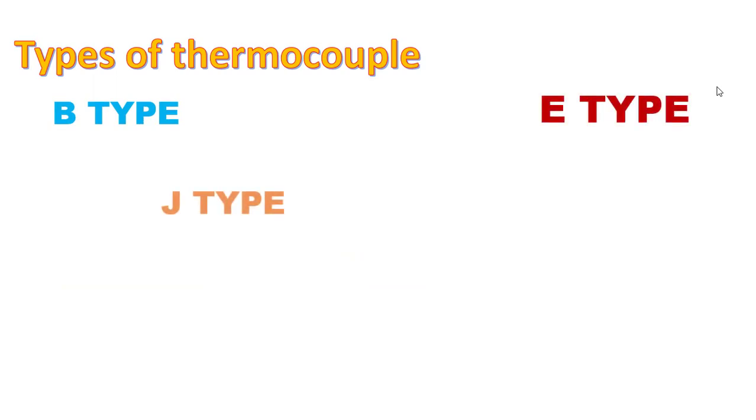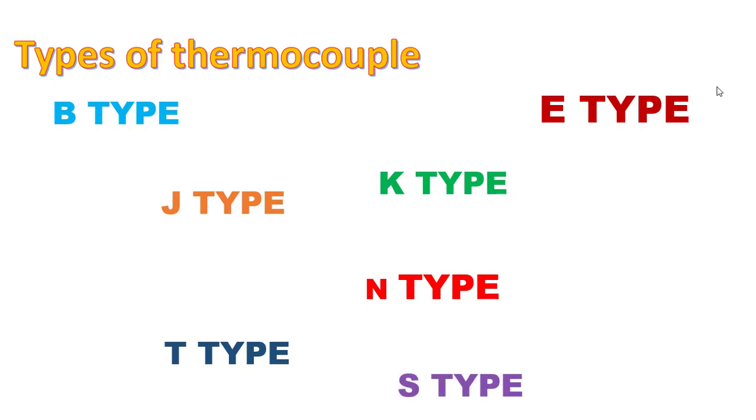Types of thermocouple: B-type, E-type, J-type, K-type, N-type, T-type, S-type, and R-type.